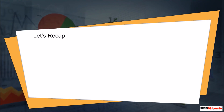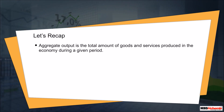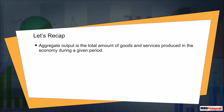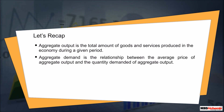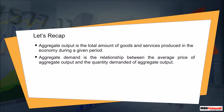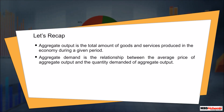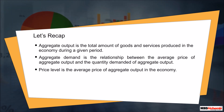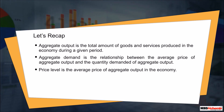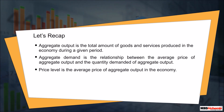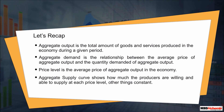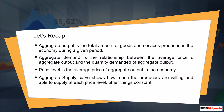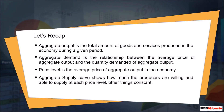Let's recap. Aggregate output is the total amount of goods and services produced in the economy during a given period. Aggregate demand is the relationship between the average price of aggregate output and the quantity demanded. Price level is the average price of aggregate output in the economy. The aggregate supply curve shows how much producers are willing and able to supply at each price level, other things constant.